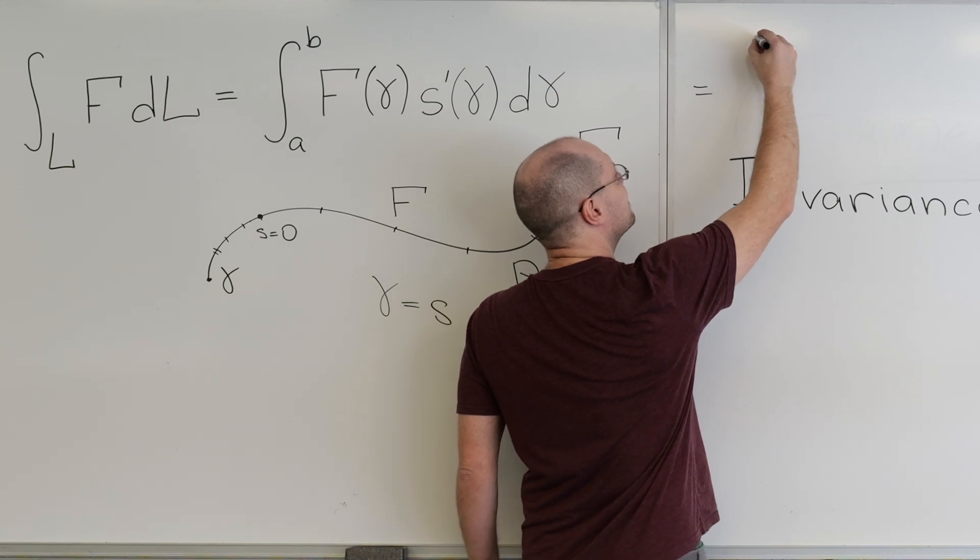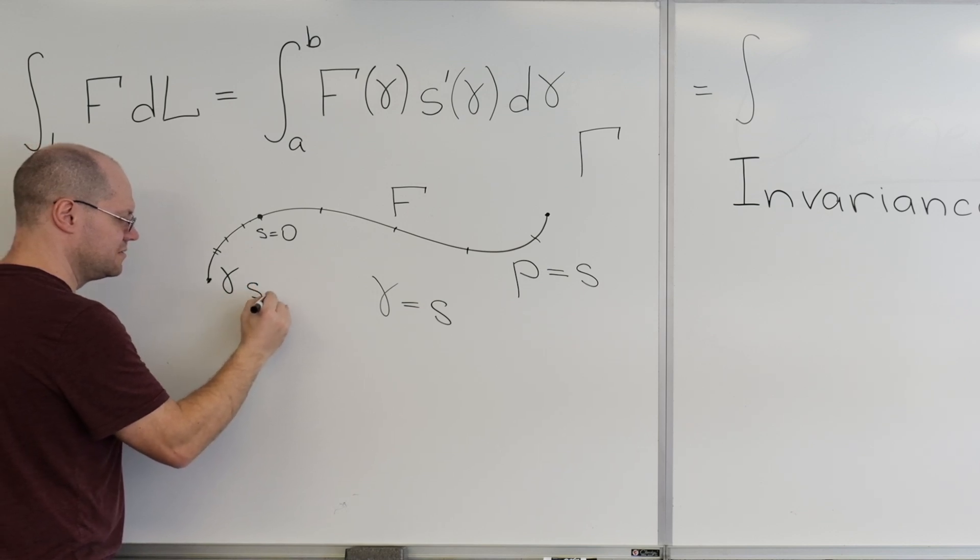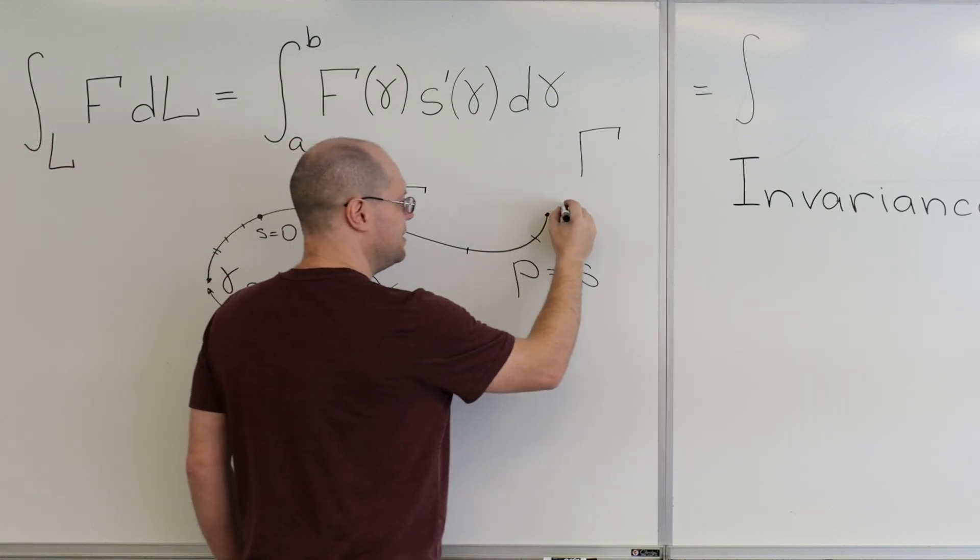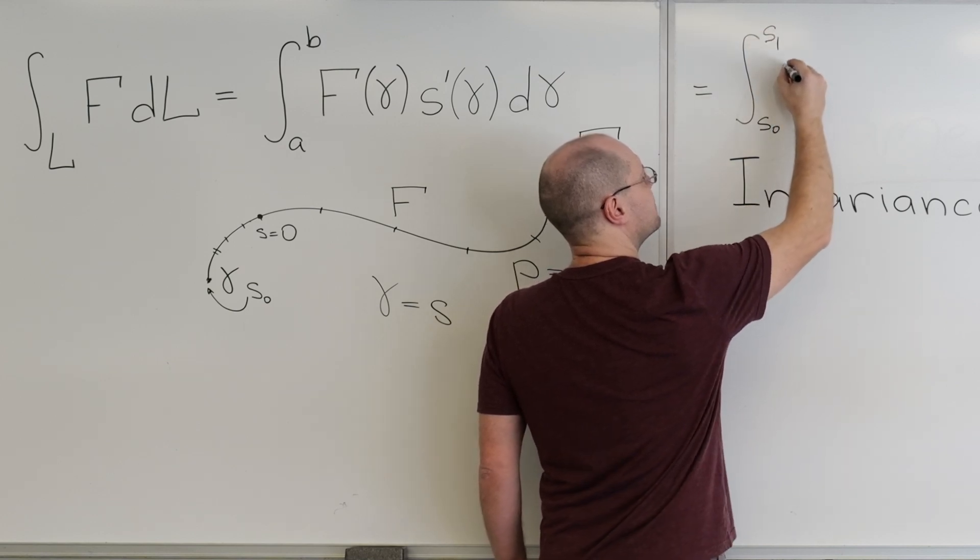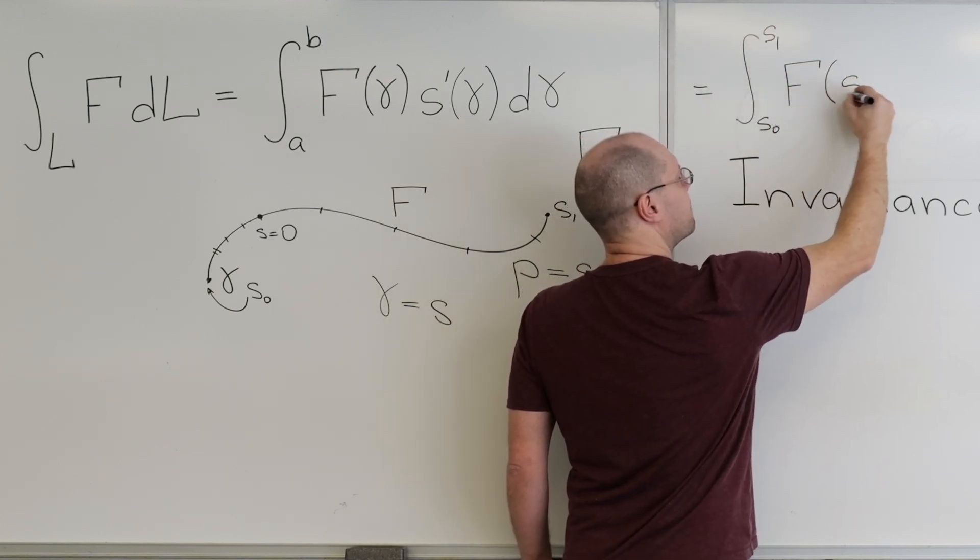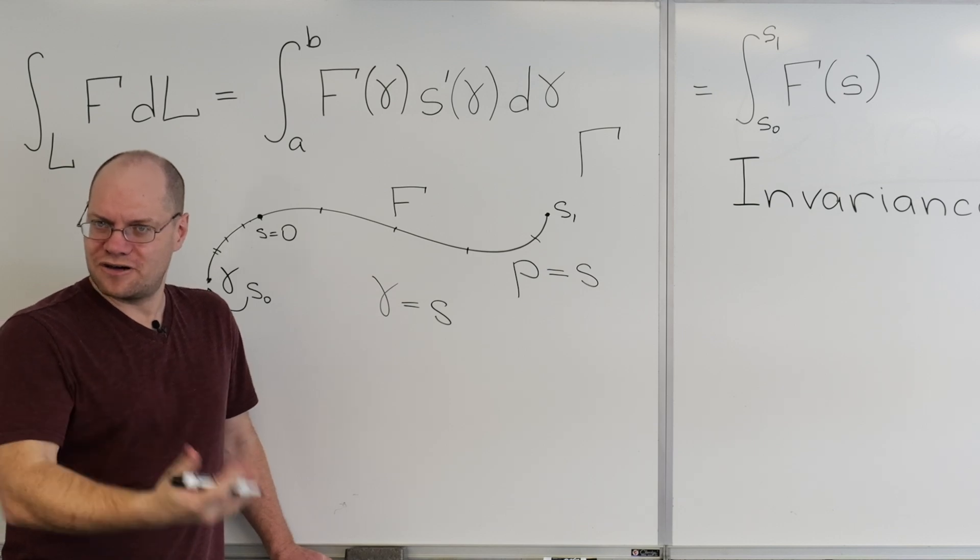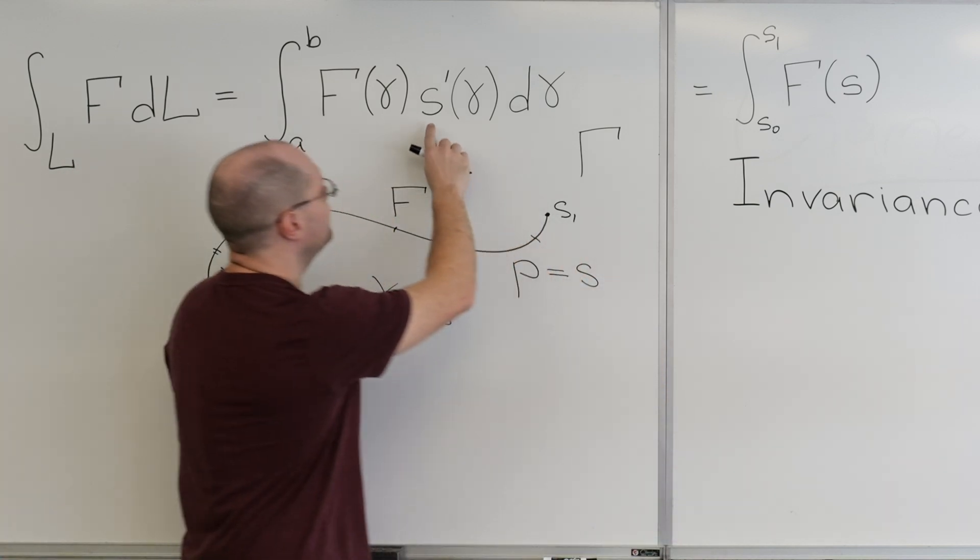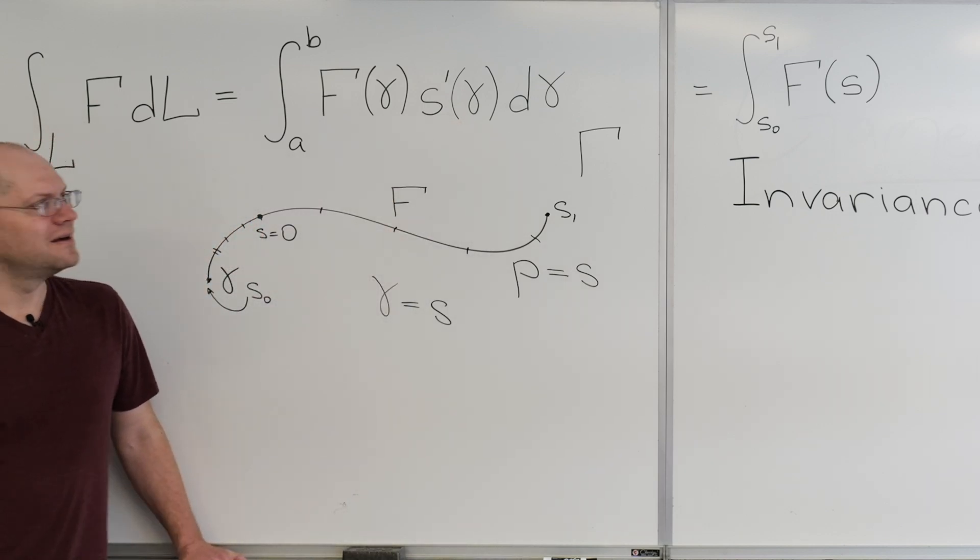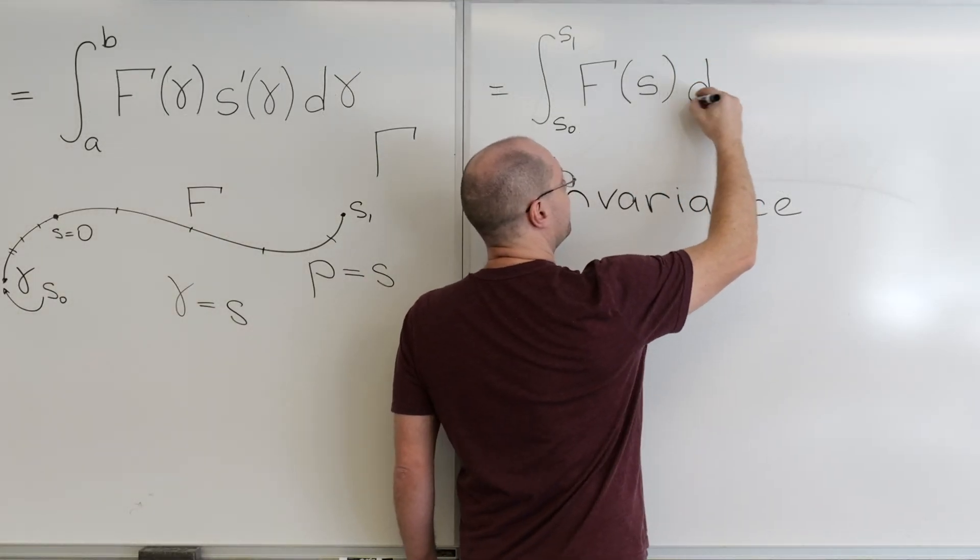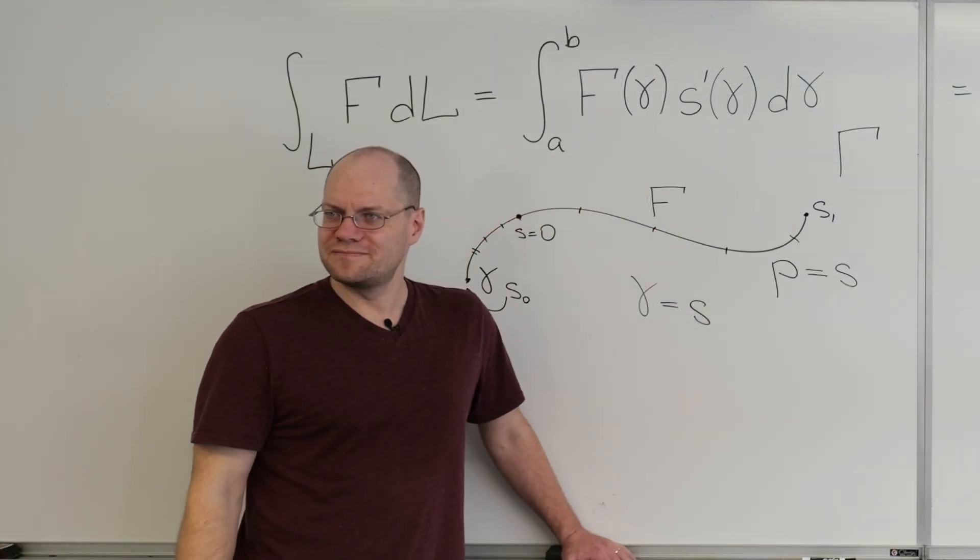And of course, what happens is, well, now I'll rewrite it. It'll be integral from whatever the value here is. Let's say it says zero. To whatever the value here it is. It says S1. So it goes from S0 to S1. F referred to S. I like the word referred, meaning whatever function it becomes as a function of arc length. F referred to S times the derivative of S with respect to S. Well, that's just one, right? And DS. That's what that integral equals for this particular choice of the parameter.